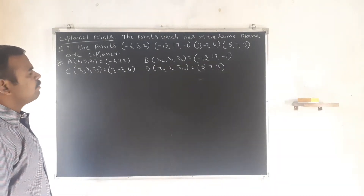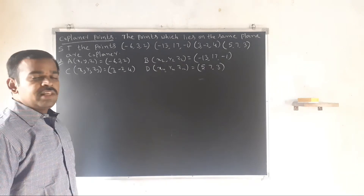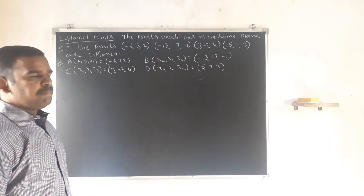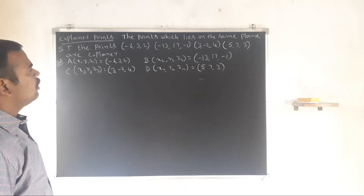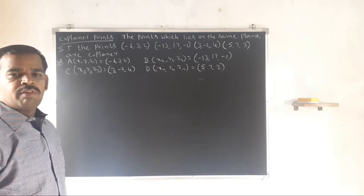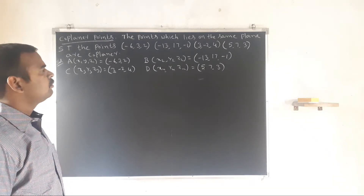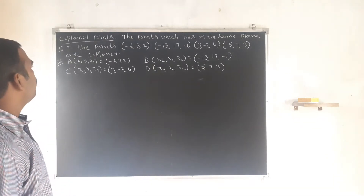Coplanar points: the points which lie on the same plane. If four points lie on the same plane, they are called coplanar points.